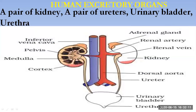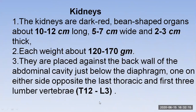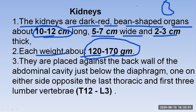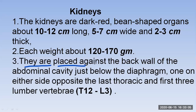The kidneys are dark red, bean-shaped organs about 10 to 12 cm long, 5 to 7 cm wide, and 2 to 3 cm thick. Each kidney weighs about 120 to 170 grams. They are placed against the back wall of the abdominal cavity, just below the diaphragm — meaning they are located on the back side, not the front.